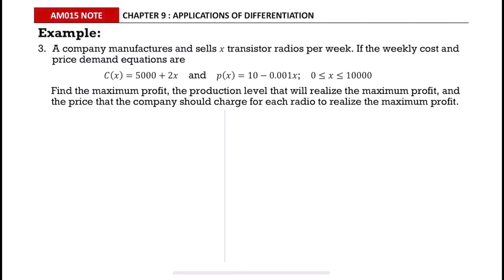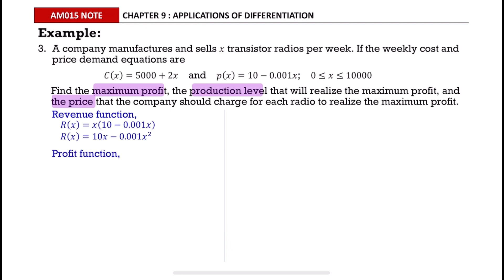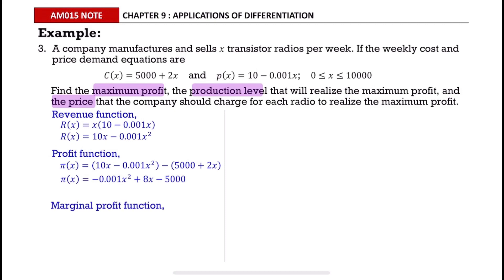Question 3: A company manufactures and sells x transistor radios per week. The weekly cost and price-demand equations are given by C(x) = 5000 + 2x and p(x) = 10 − 0.001x, where x is from 0 to 10,000. Find the maximum profit, the production level that will realize the maximum profit, and the price the company should charge. First, find the revenue function, then the profit function, then differentiate to get the marginal profit function.